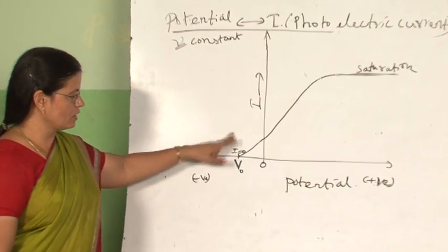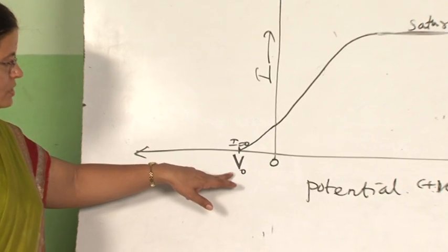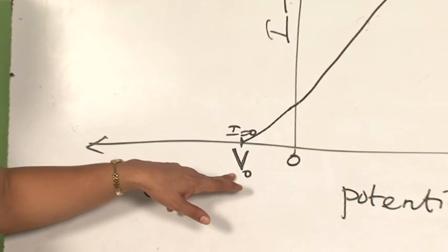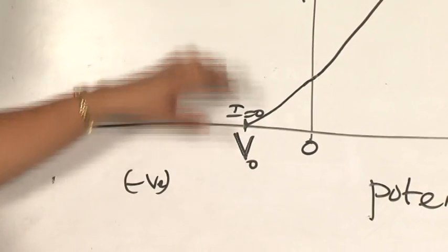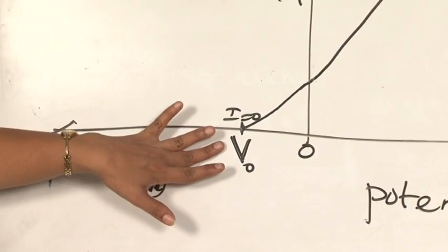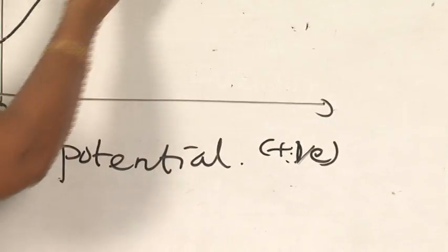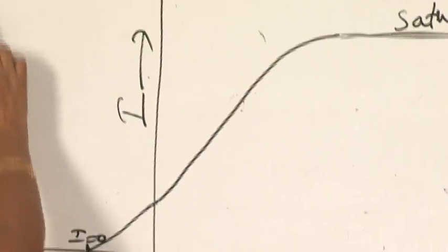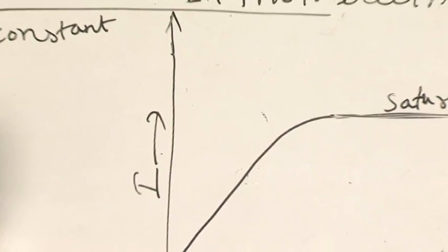The stopping potential is a negative potential applied to the collector plate at which the photoelectric current becomes zero. Throughout this curve, the frequency of incident radiation is kept constant.